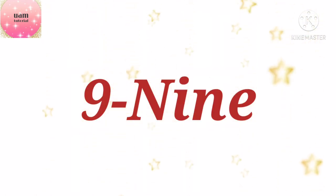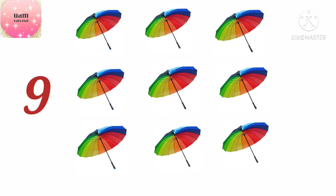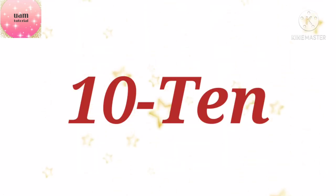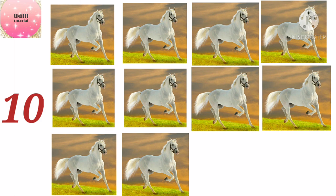Nine — N-I-N-E — here there are nine umbrellas: one, two, three, four, five, six, seven, eight, nine. Ten — here there are ten horses: one, two, three, four, five, six, seven, eight, nine, ten.